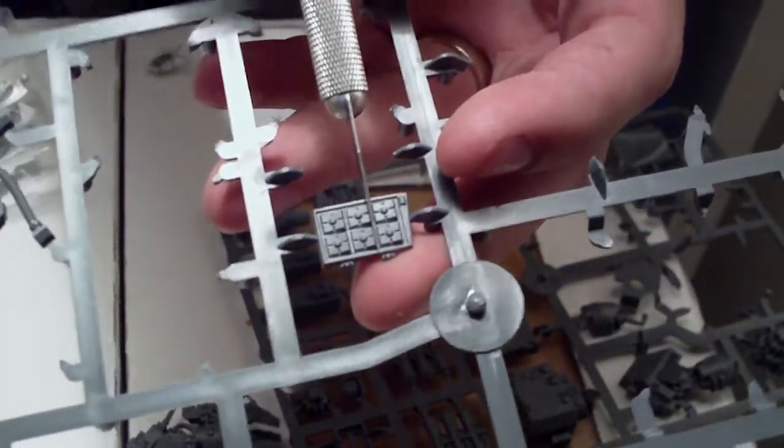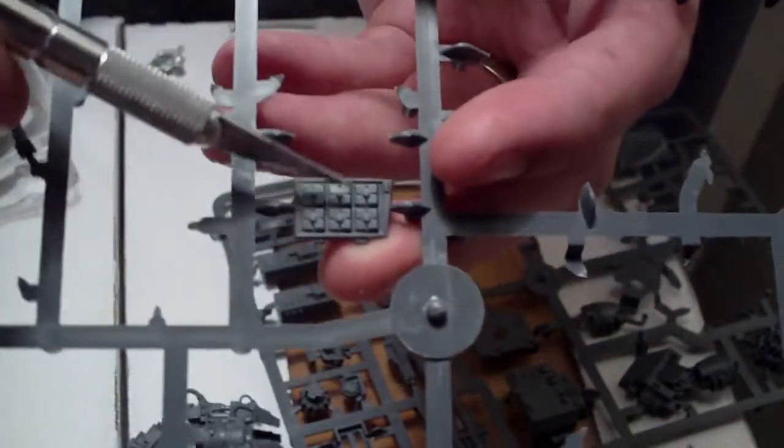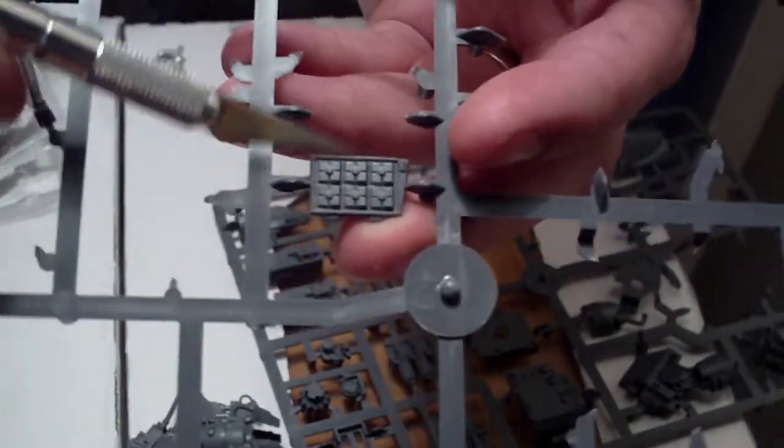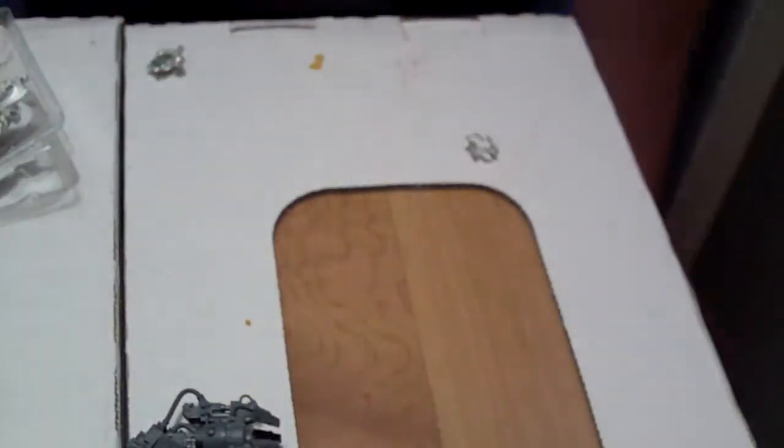What I did was I cut here, cut here, cut here and here, so you get this perfect square and it'll fit right on the end of the Death Wind launcher.